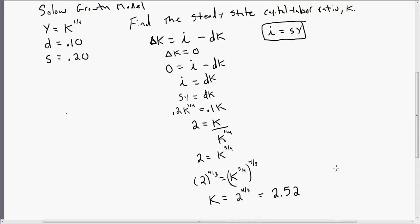All right. What else can we find in this problem? We can find the steady-state GDP per worker, or output per worker. So let's find the steady-state GDP, or output per worker.